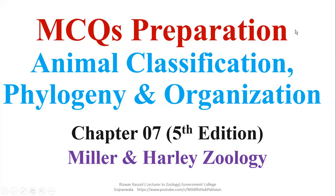Bismillah ar-Rahman ar-Rahim. Today we are going to have some discussion about MCQs of First Unit of Paper B, Zoology Animal Classification, its Phylogeny and Organization. These questions have been taken from 5th edition of Miller & Harley Zoology, Chapter 7. Let's move to question number 1.